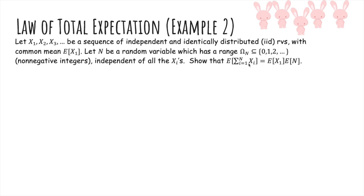then if I take the expected value of a sum of a random number of random variables, then this expectation is the expected value of one random variable times the expected number of those random variables that we have. So this is kind of intuitive, but we do need to prove it.